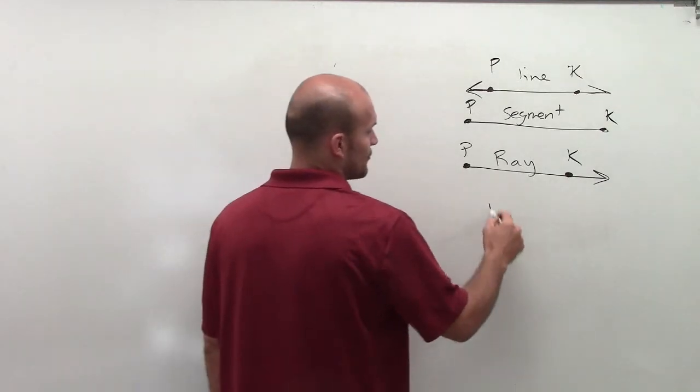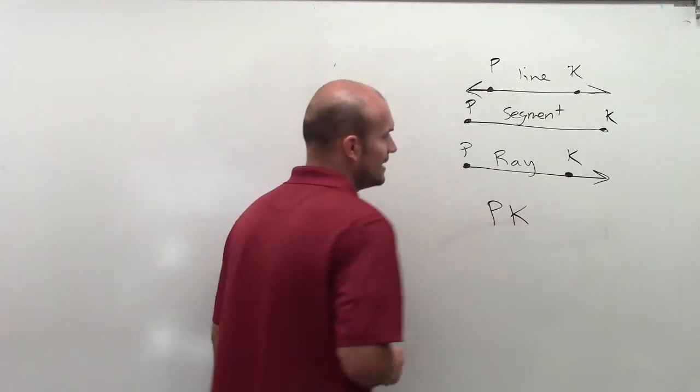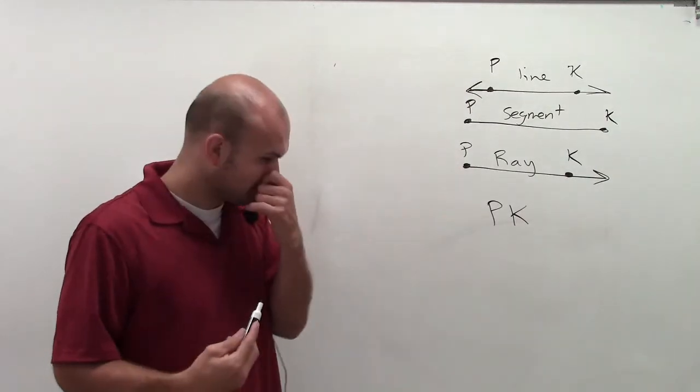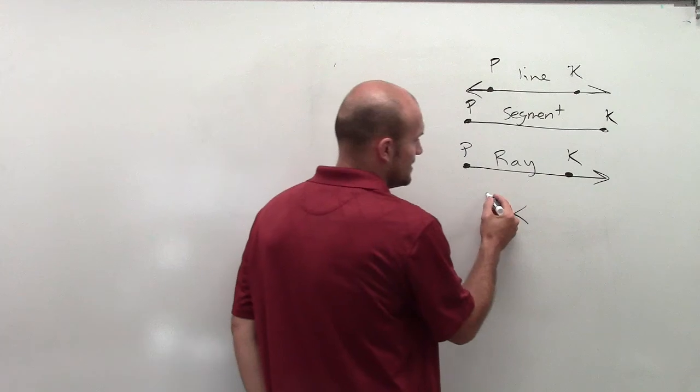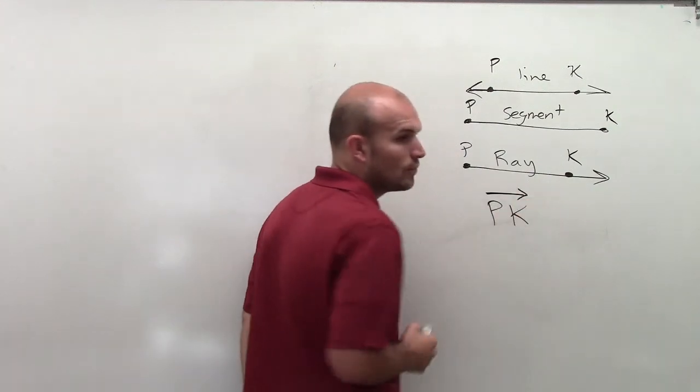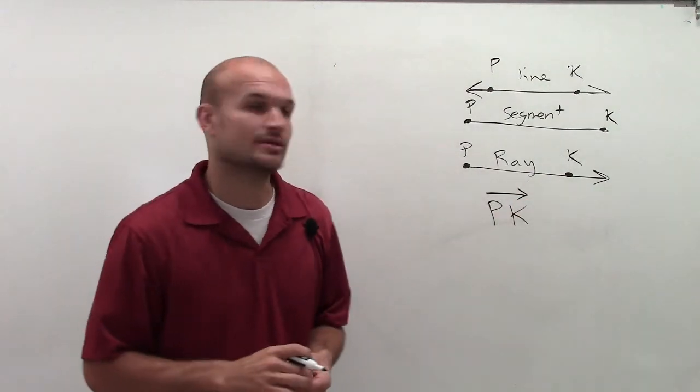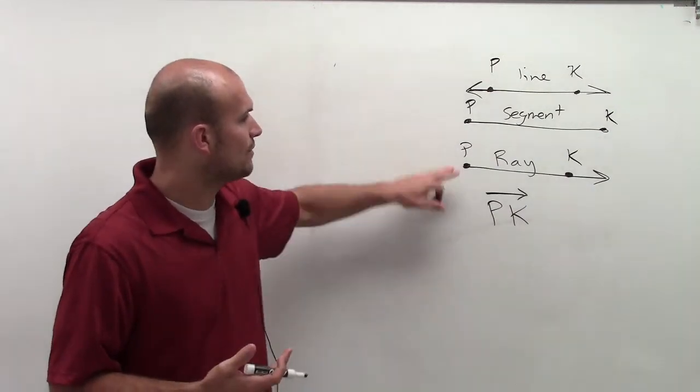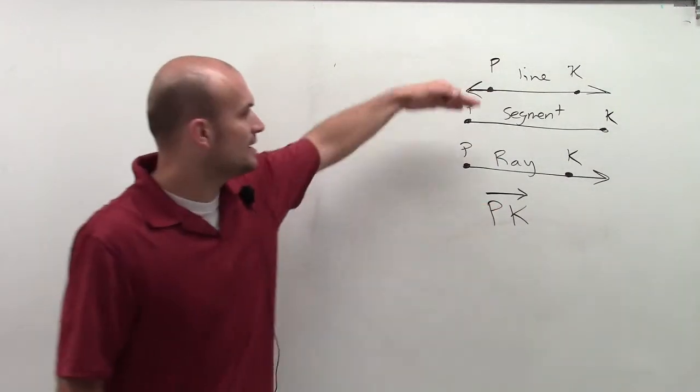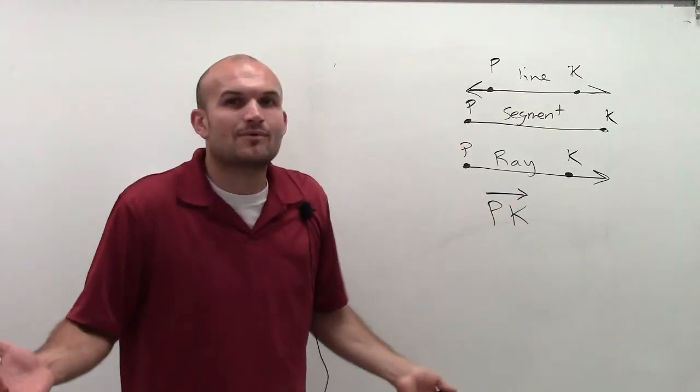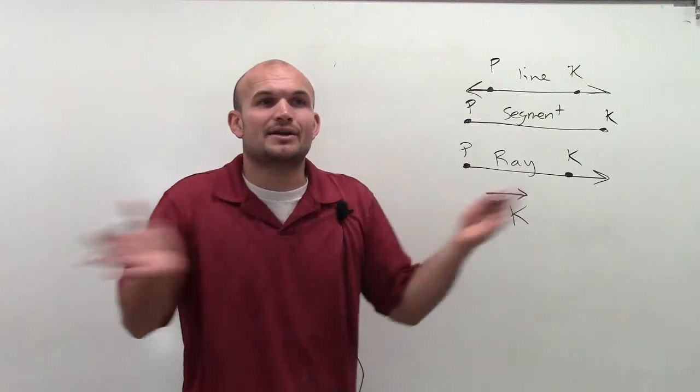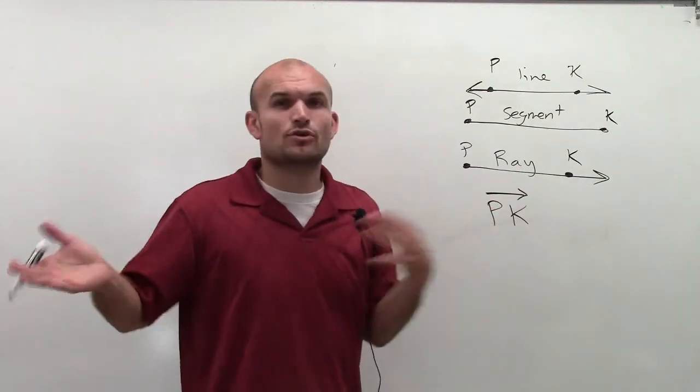Now, how we want to write a ray is, when writing a ray, we're going to start on this point. You're going to write a line with an arrow in one direction. And it's also important when writing a ray that we want to start with our endpoint. Here we had two endpoints, so it doesn't matter which endpoint we use. Or a line, it goes in both directions, so it doesn't matter which order you do.